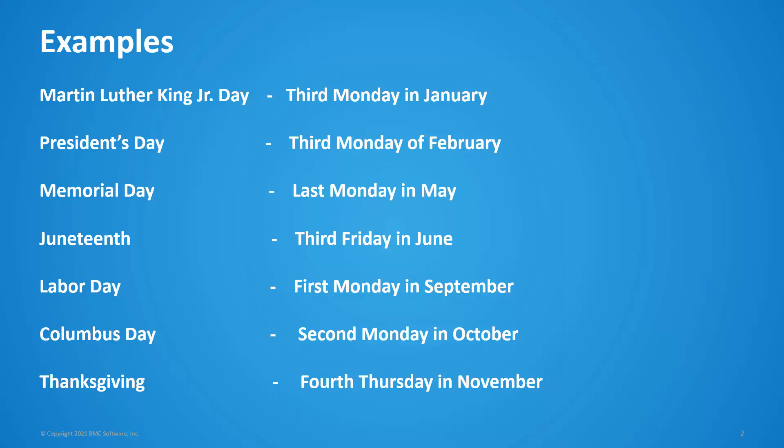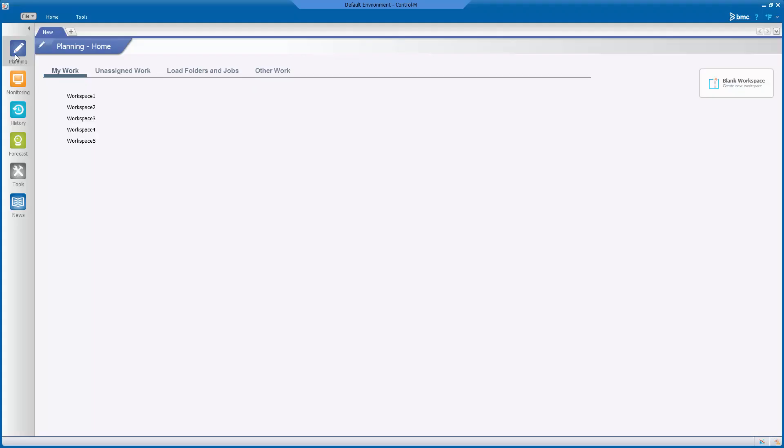Note that you will have to create a separate rule-based calendar for each of these holidays. You can only combine any of these holidays into one calendar if the holiday falls on the same day and the same week. From the list on your screen, we can only combine Martin Luther King Jr. Day and President's Day in one rule-based calendar. Let's go ahead and show you how that is done.